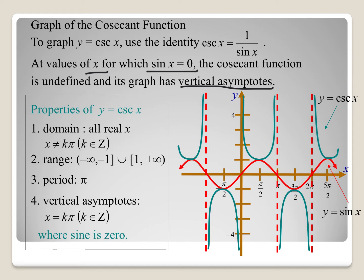For the period, one cycle of our cosecant goes from 0 to pi, or another cycle from pi to 2 pi. So either the upward or downward facing parabola represents one period. For the range, we go from negative infinity up to negative 1, or from 1 up to positive infinity, ignoring the sine function portion in between. We'll graph the sine function first and then use it to sketch the cosecant.